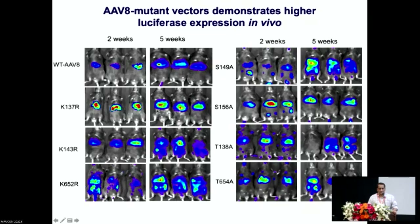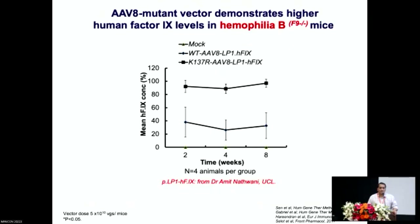We identified several beneficial mutations in the AAV8 serotype. You can clearly see that this is intravenous administration of the vector in mice containing luciferase as the gene — there is a two- to three-fold increase in hepatic gene transfer. We then collaborated with Dr. Amit Natwani, who was the first to introduce gene therapy for hemophilia B almost a decade back. Using this AAV8 serotype, we were able to get at least a two-fold increase in factor IX expression with the new capsids we had developed.